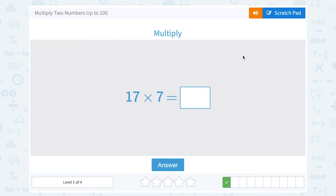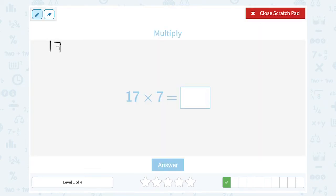17 times seven. So 17 times seven, if you're not sure off the top of your head, what you would do is set it up like this. I'm going to multiply the seven times both digits. Seven times seven is 49, so I would write the nine and bring the four over into the next place value. Seven times one is seven plus the extra four that I brought over is 11. So altogether, my answer is 119.